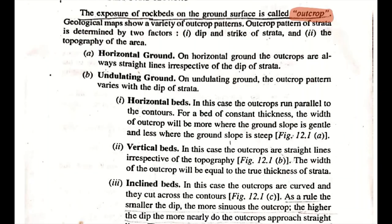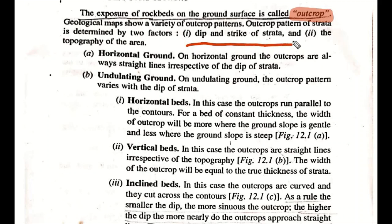In the previous class, we revised the concept of outcrop. The exposure of rock beds on the ground surface is called an outcrop. The outcrop pattern is determined by two factors: the topography of the area and the dip of the strata.